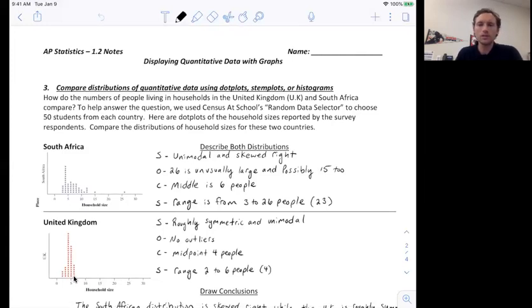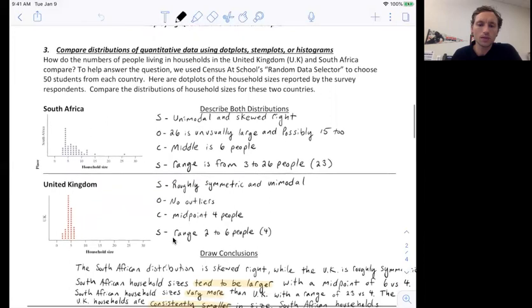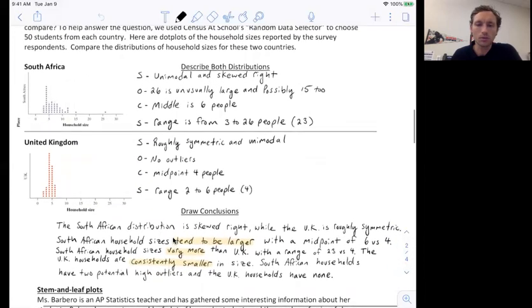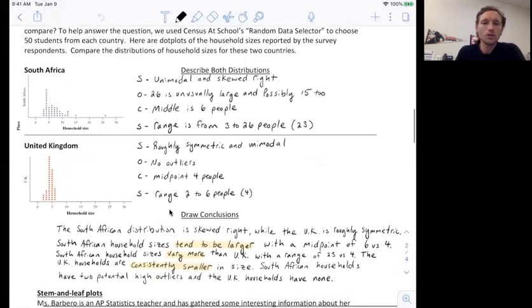So the key here is they want us to compare these distributions. We know all the facts or the information that we need about each. Now, what are some noticeable differences? I want to show you my terminology because it's going to be really important for you to use it. I want you to compare each of these, the shapes. So they're different. South Africa appears to be skewed right while the United Kingdom is roughly symmetric, but both are unimodal. It's an important thing to make a note of.